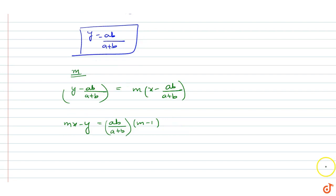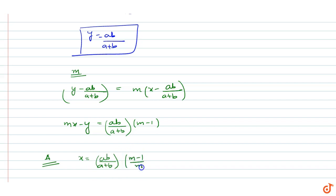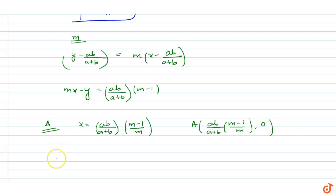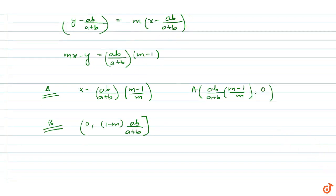Since the line meets the coordinate axes at A and B: at point A on the x-axis, y = 0, so x = ab(m−1)/(m(a+b)). Thus A = (ab(m−1)/(m(a+b)), 0). At point B on the y-axis, x = 0, so B = (0, (1−m)·ab/(a+b)).